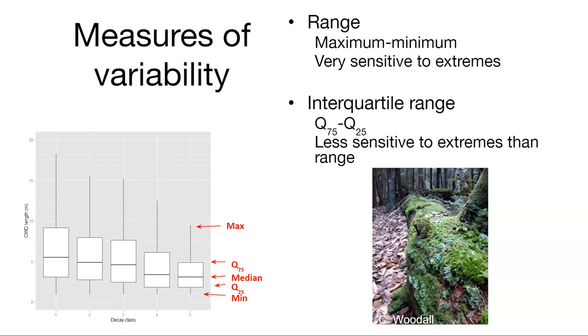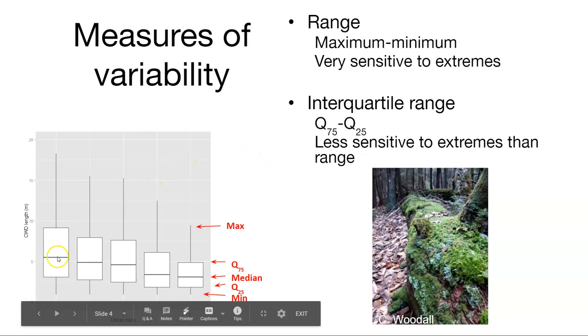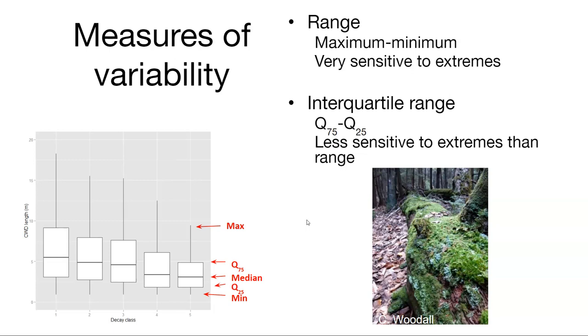What about ways to measure variability? What you're seeing here on the left is a box plot showing the length of coarse woody debris logs in a forest. And so the box plot measures five things. We have the median value, the quartiles at the 75th and the 25th quartile, and then the maximum and the minimum values. And so what you're seeing here are five different box plots for five different decay classes that pieces of coarse woody debris have.